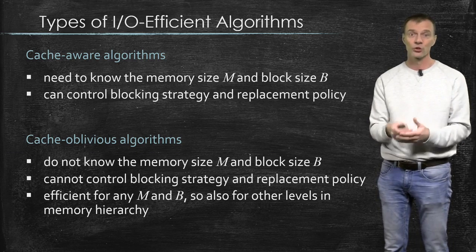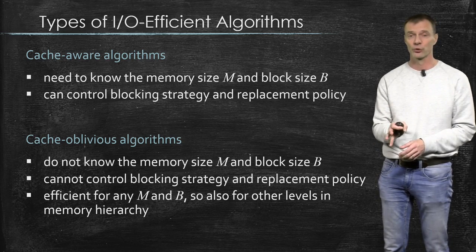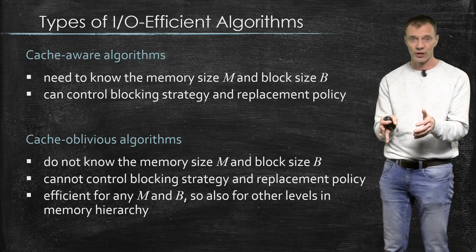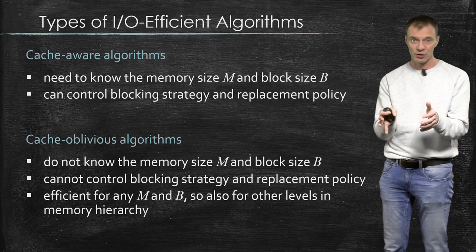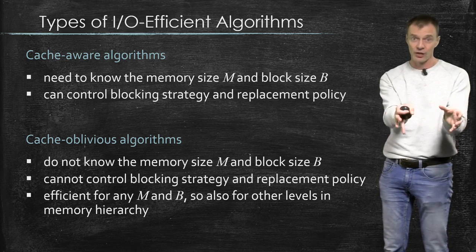If it's cache-oblivious and it does few I/Os, then that holds at all the levels. And this is something that is not true for cache-aware algorithms, because there you actually set it up in such a way that it uses the fact that you can put a certain number of items, B, together in one block.